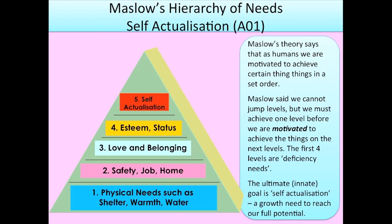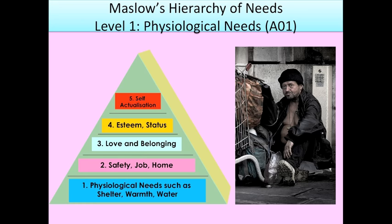Maslow created something called the hierarchy of needs, which is a theory that says as humans we are motivated to achieve certain things in a set order. Maslow said we can't jump levels — we must achieve one level before we are motivated to achieve the next. He said the first four levels are called deficiency needs, meaning that if we are deficient in those things, we will be solely motivated to achieve them before we think about anything on the higher levels. The ultimate goal is self-actualisation, which is a growth need to reach our full potential.